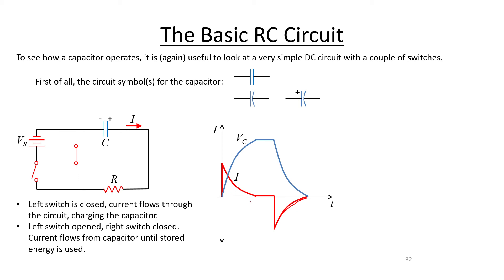The current is shown as negative here because it flows in the opposite direction compared to when the battery was connected — that's why it's negative on the graph. We're generally not going to be looking at capacitors in DC circuits, but it's helpful to examine this to understand what happens when you apply voltages, charge up, and discharge capacitors. In an AC circuit, a capacitor has an effect not completely dissimilar to that of an inductor in an AC circuit.